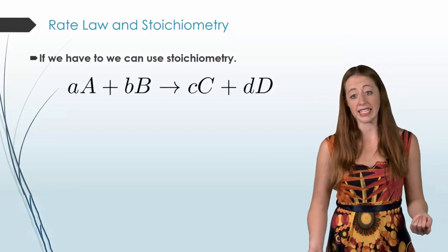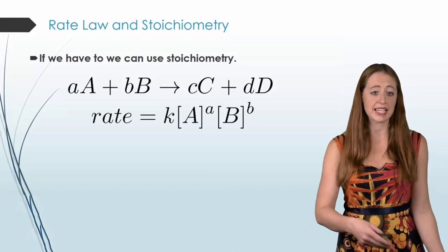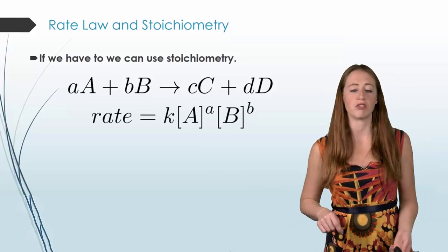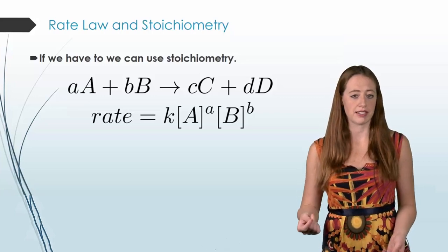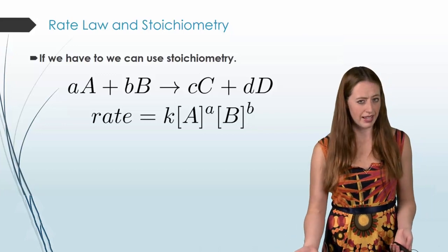So this method lets us take a guess based on the coefficients. So we can take and say, well, reactant A has a coefficient, in this case I kept it general, so I used a little a, and raise it to that. Reactant B has a coefficient little b, and we can raise it to that.